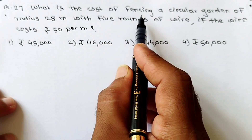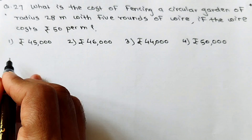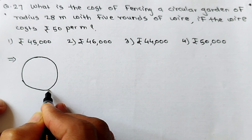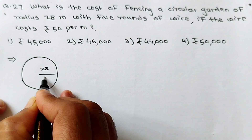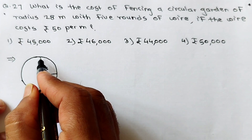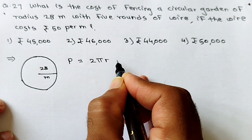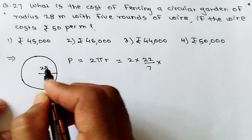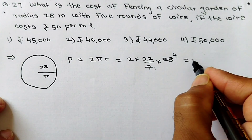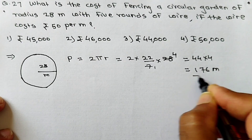Question number 27: What is the cost of fencing a circular garden of radius 28 meters with 5 rounds of wire if the wire costs rupees 50 per meter? Draw a rough sketch of the circular garden. The radius is 28 meters. To calculate the length of wire, we need the perimeter of the circle, which is 2πr, where π is 22 upon 7. Putting in the values: 2 into (22/7) into 28 equals 176 meters.